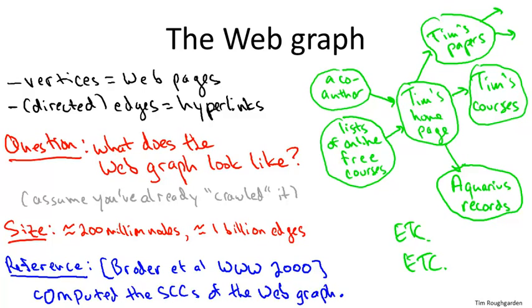If you wanted to do the same computation today, you'd have one thing going against you and one thing going for you. The obvious thing going against you is that the web is still very much bigger. The thing going for you is now there's specialized systems which are meant to operate on massive data sets and can compute connectivity information on graph data.